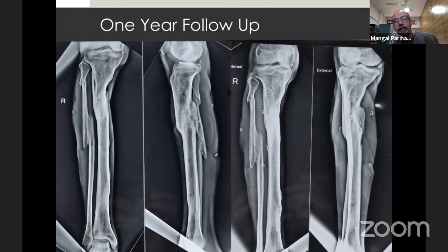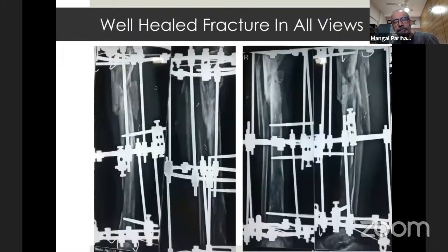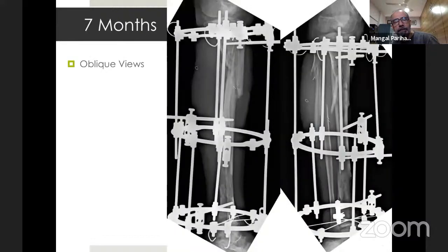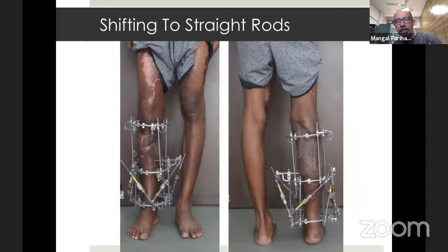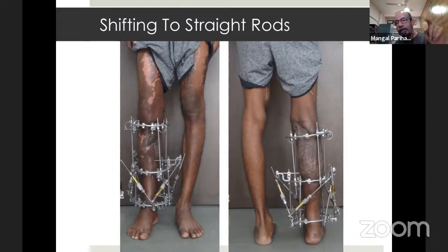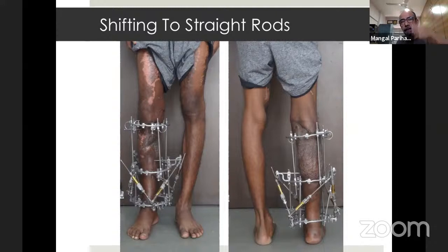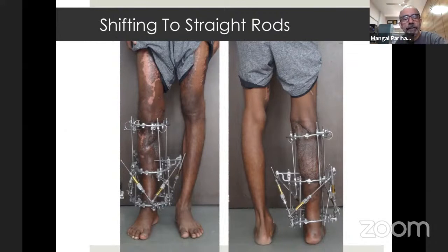One question: go back to the fixator clinical picture. These rods on the non-union side — when you have such a long distance, I would prefer to use a graduated telescoping rod in that long distance, because over that long distance these thin rods tend to be a little unstable. So even if it's a long regenerate that I've transported, once transport is done, I will change to a graduated telescopic rod so that all around I have a slightly stiffer construct.